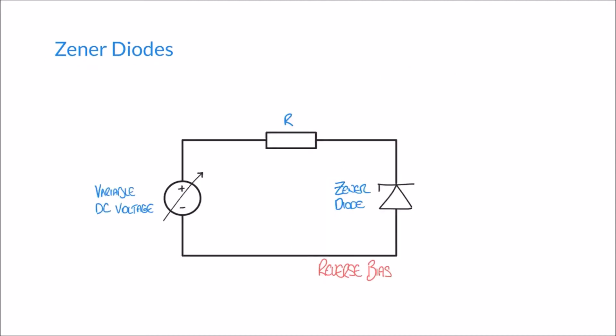In reverse bias things are different and here we have a diagram of a circuit which shows a Zener diode in reverse bias. What we can do is like we did in our previous diagram, we can vary our DC voltage supply and plot a result of currents flowing in my circuit here for a range of voltages and that's going to give me a VI characteristic again.